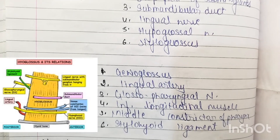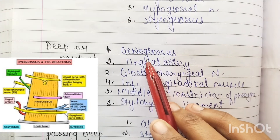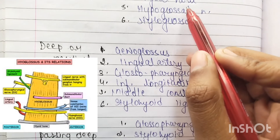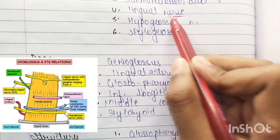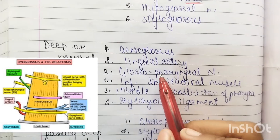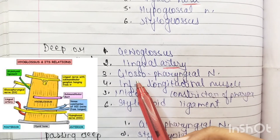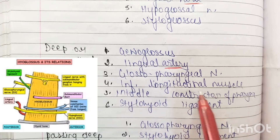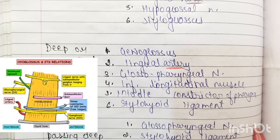Coming to the deep or medial relations: we have the genioglossus, the lingual artery — note that the lingual nerve is superficial, while the lingual artery is deep or medial. Then we have the glossopharyngeal nerve, the inferior longitudinal muscle, the middle constrictor of the pharynx, and the stylohyoid ligament.